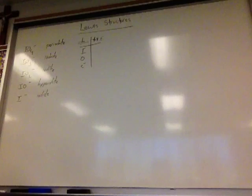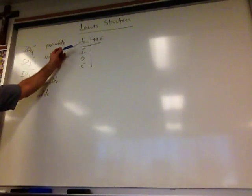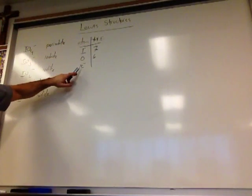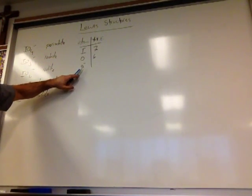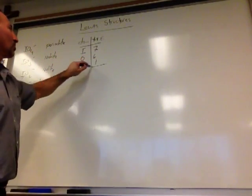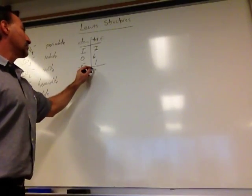The first step is to do an accounting of how many valence electrons there are in the molecule. Iodine is group 17, so it has 7 valence electrons. Oxygen is group 16, so it has 6. And there is an extra electron added to account for the negative charge on the polyatomic ion. So the total number of electrons that have to be accounted for in our Lewis structure is 14.